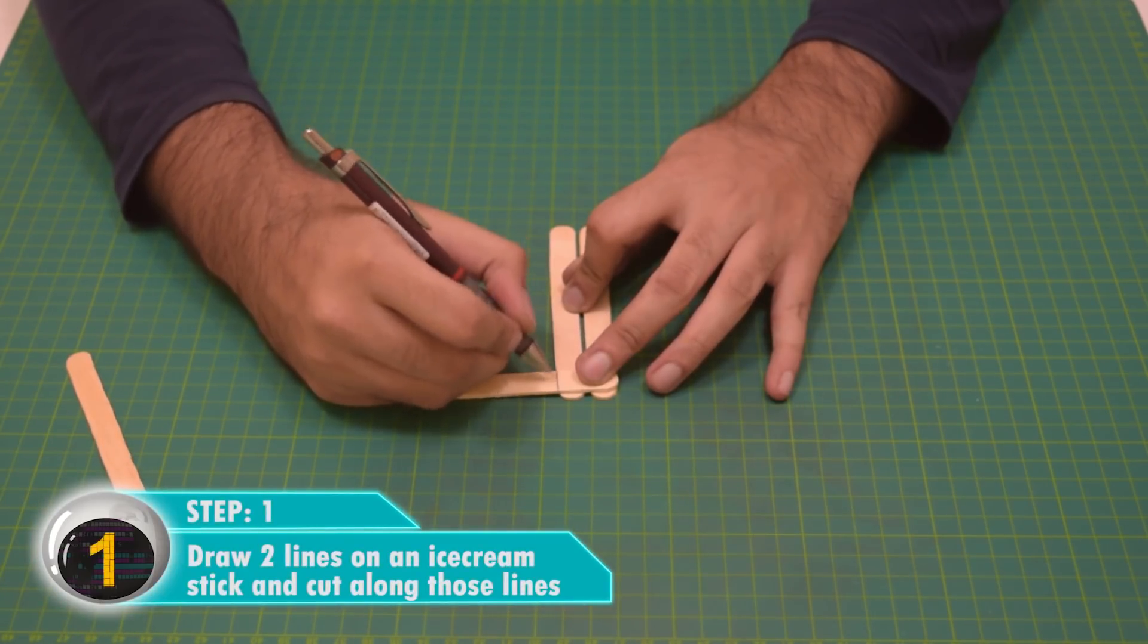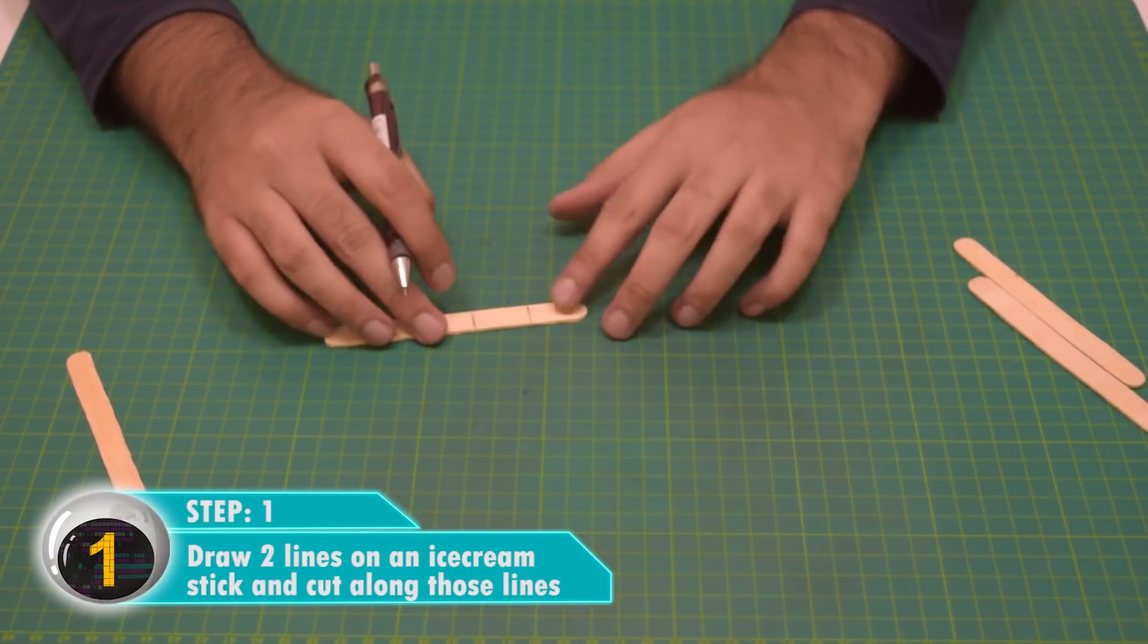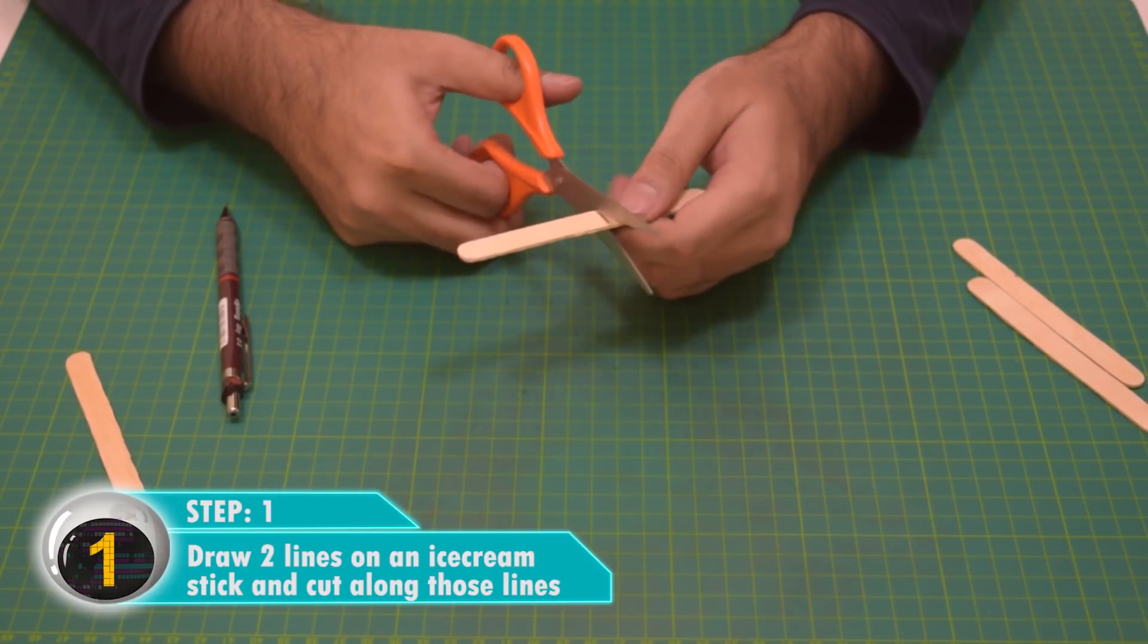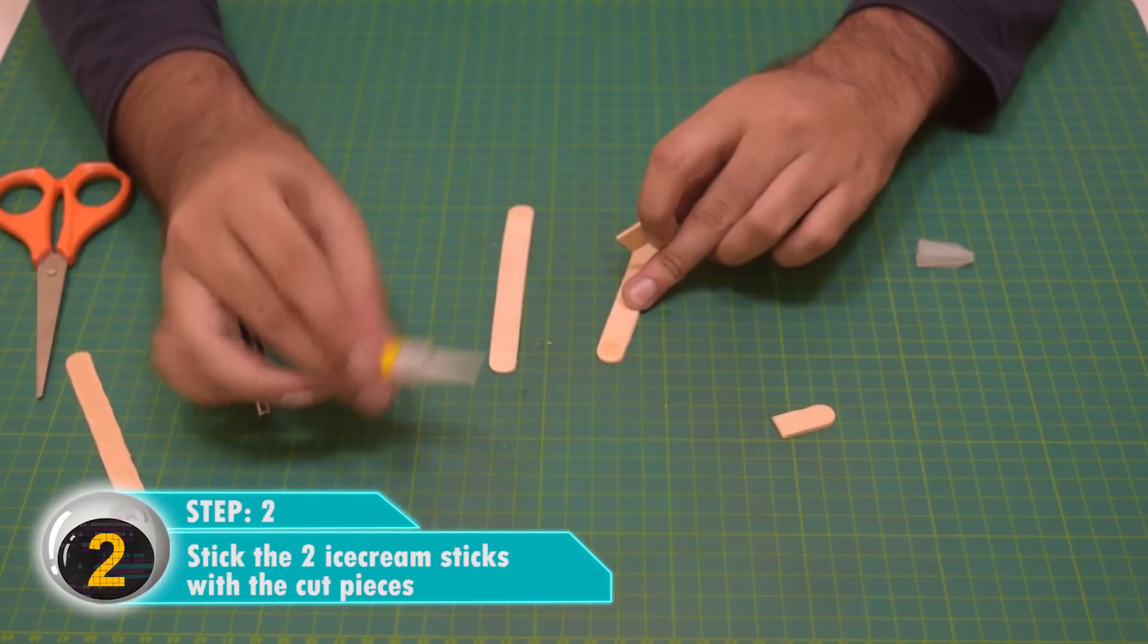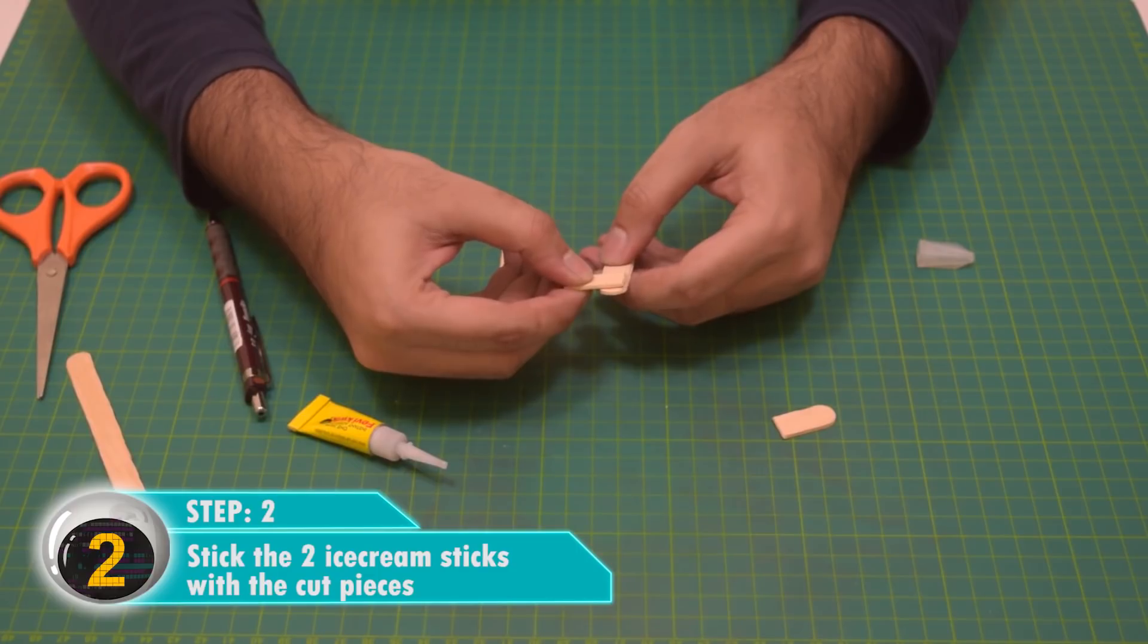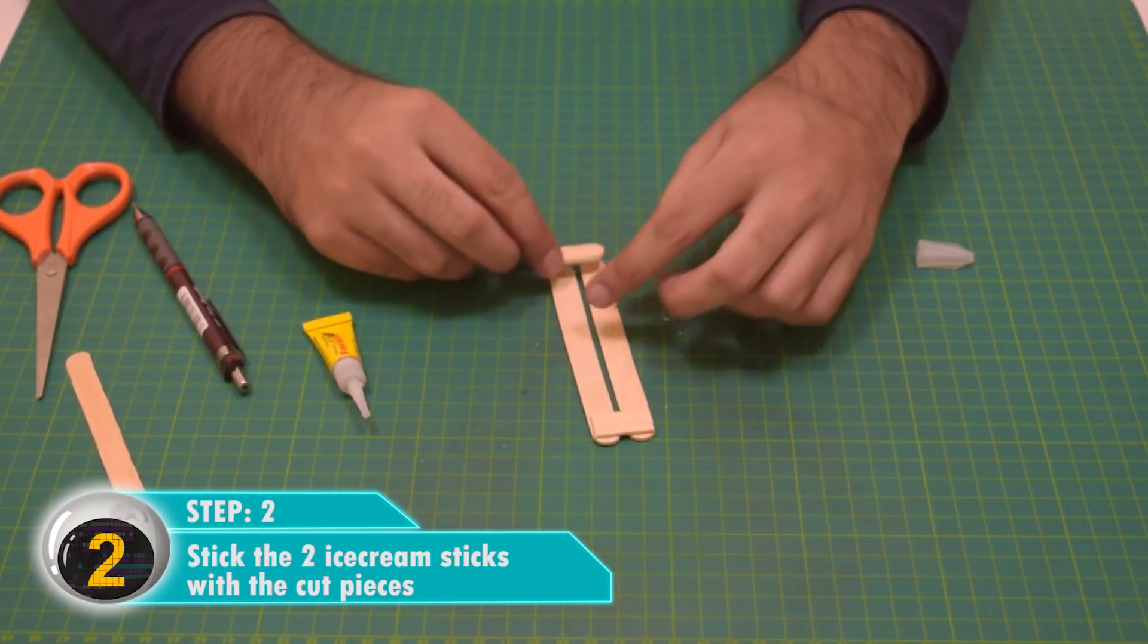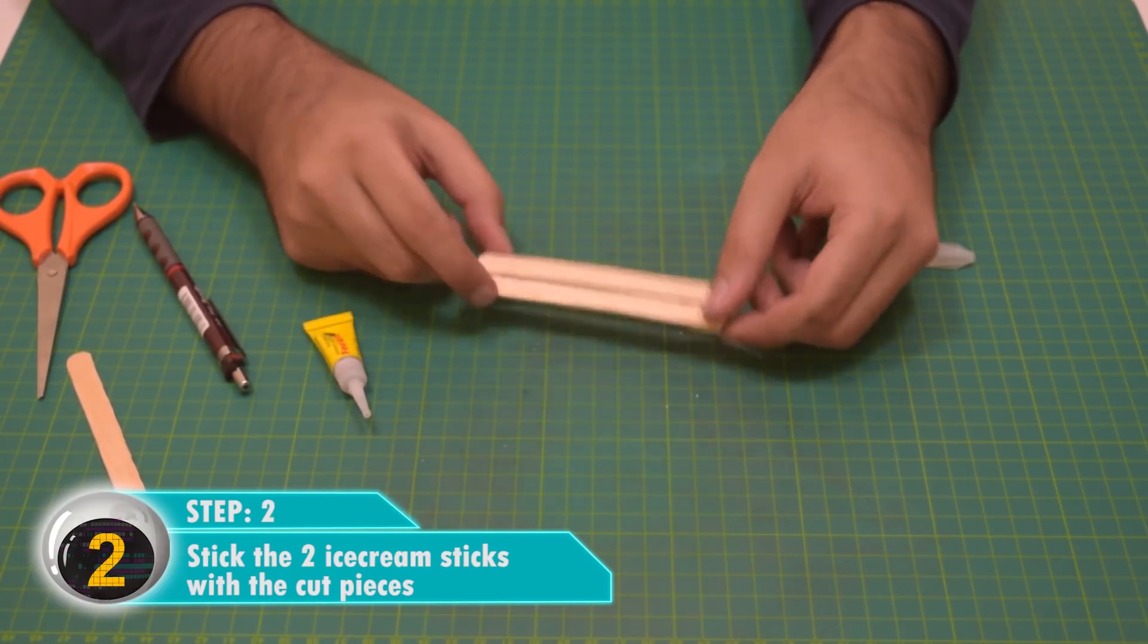Draw two lines on an ice cream stick and cut along those lines. Why are we doing this exactly? So that we have a frame for the fan to sit on. Okay, so then stick the two ice cream sticks with the cut pieces. Make sure to leave a gap in between for the fan to rotate. Mark and make a small hole with a pin on one side.